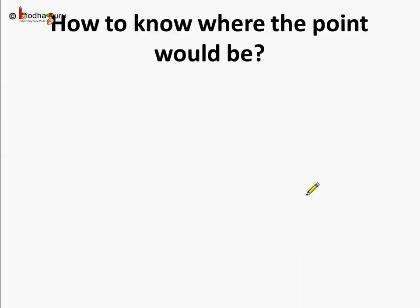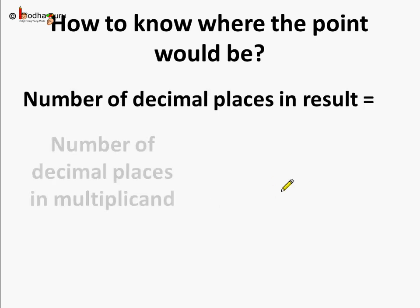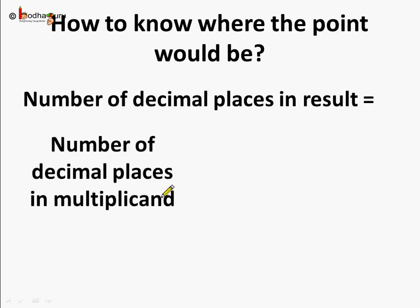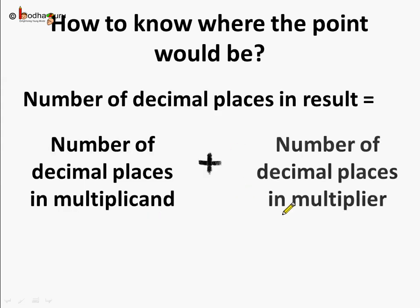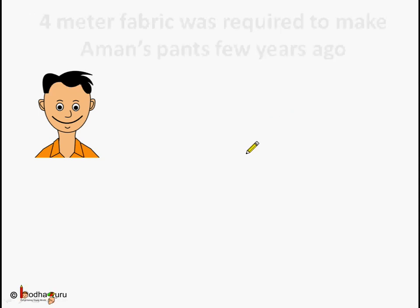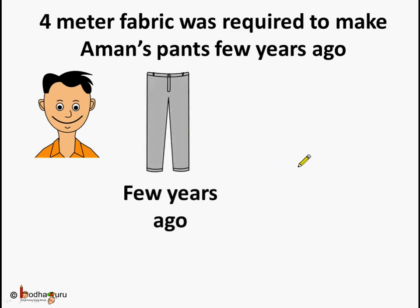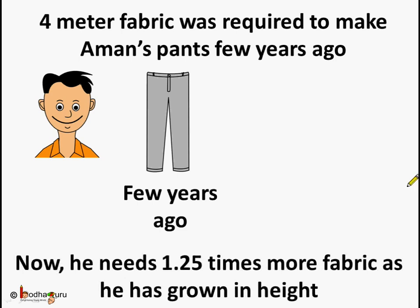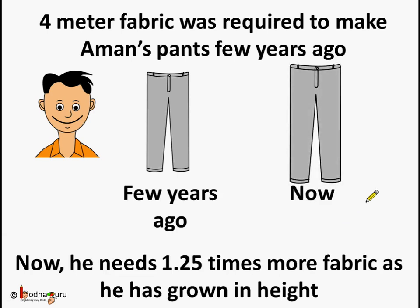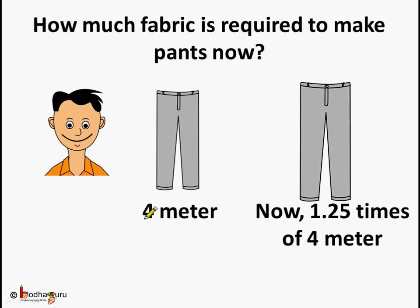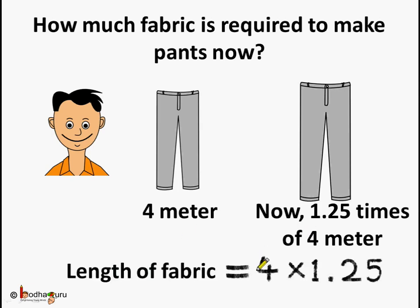Simple! To reiterate where to put the decimal point: the number of decimal places in the result equals the number of decimal places in the multiplicand plus the number of decimal places in the multiplier. Let's take another problem. Amman required four meters of fabric to make his pants, but now Amman has grown taller and requires one point two five times more fabric. How much fabric will he require? We are going to do multiplication to find it. Four meters was the previous fabric requirement and now he requires one point two five times of four meters. So the length of fabric now is four meters multiplied by one point two five.